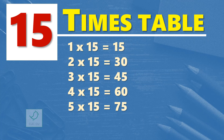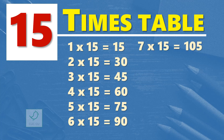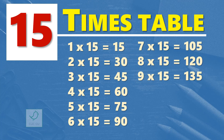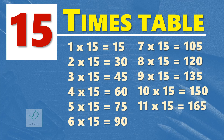5 times 15 are 75. 6 times 15 are 90. 7 times 15 are 105. 8 times 15 are 120. 9 times 15 are 135. 10 times 15 are 150. 11 times 15 are 165. 12 times 15 are 180.